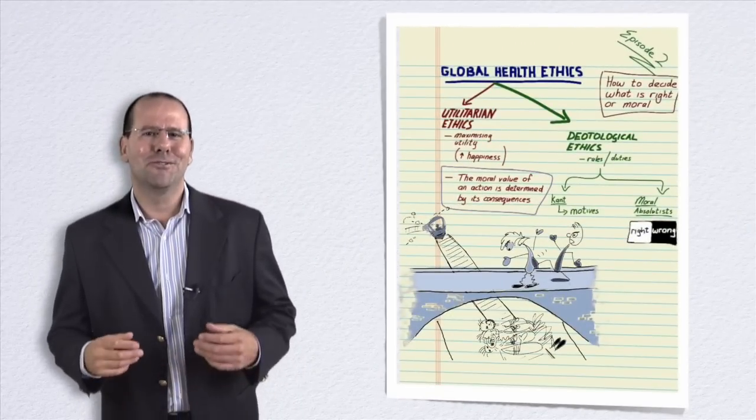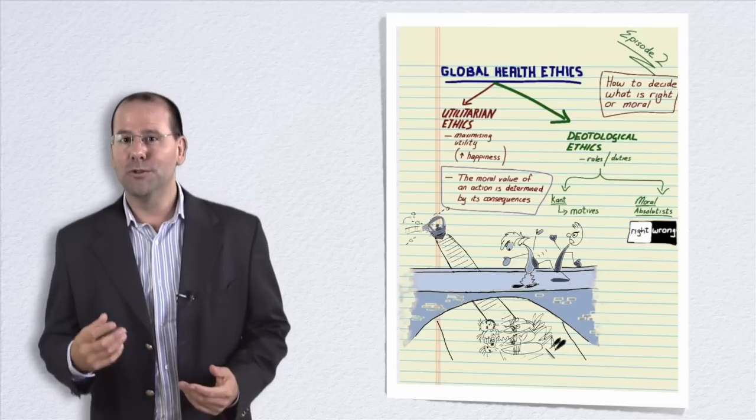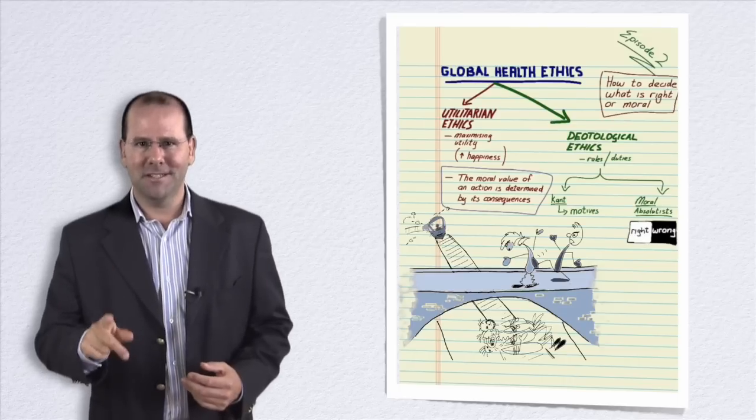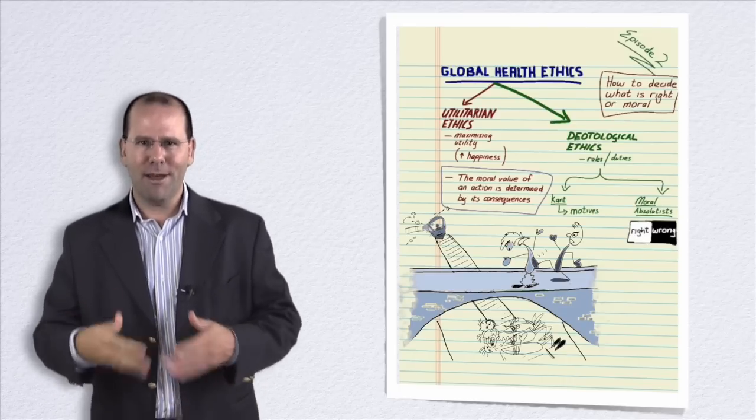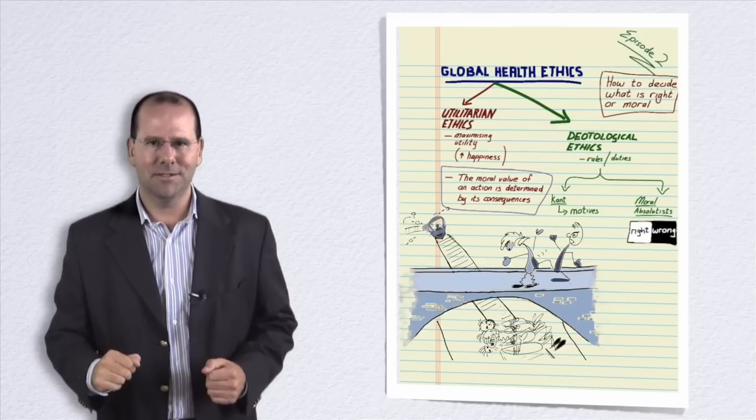Now, as you can imagine, this trolley experiment can be extended in a number of ways. So, for example, what would you do if you didn't have to push the tramp off the footbridge, but you could instead pull a lever that would open a trap door through which the tramp would fall onto the tracks, stopping the trolley and saving the five lives.